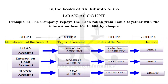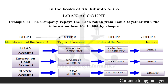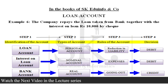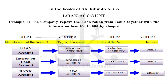Example six: the company repays the loan of rupees five lakhs together with interest of rupees ten thousand by cheque, but the interest has not been transferred to the loan account yet. We take three account heads: loan account, interest on loan account, and bank account. Loan account is debited with rupees five lakhs as a reduction in liability. Interest on loan, being an expense under nominal account, is debited with rupees ten thousand. Bank account is credited with five lakh ten thousand since the total amount goes out.